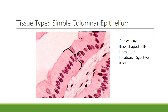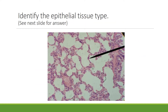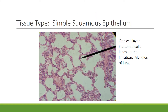This tissue is simple columnar epithelium. It's simple because there's one cell layer, columnar because it's shaped like a column, and it's epithelium because it lines or covers a surface with a blank space on one side. The next example is the alveolus of the lung — you should be able to see the flattened cells at the tip of the pointer. This is simple squamous epithelium: simple because it's one cell layer, squamous because the cells are flattened, and epithelium because it lines a tube.